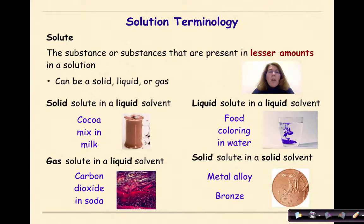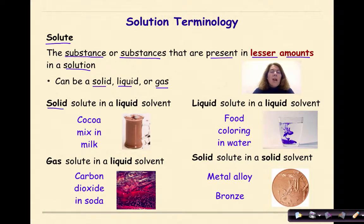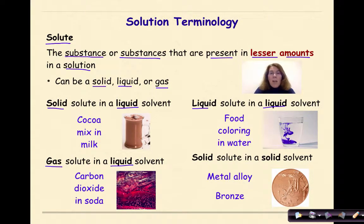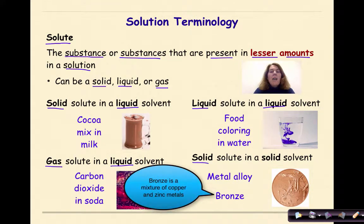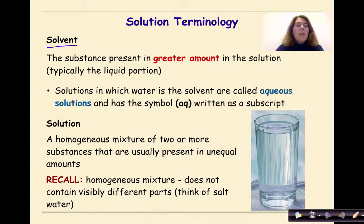The first term you need to know is solute — the substance or substances present in lesser amounts in solution. Solutes can be a solid, a liquid, or a gas. An example of a solid solute in a liquid solvent could be cocoa powder in hot cocoa; a liquid solute in a liquid solvent might be food coloring in water; a gas solute in a liquid solvent could be carbon dioxide in soda. A solid solute in a solid solvent would be a metal alloy like bronze.